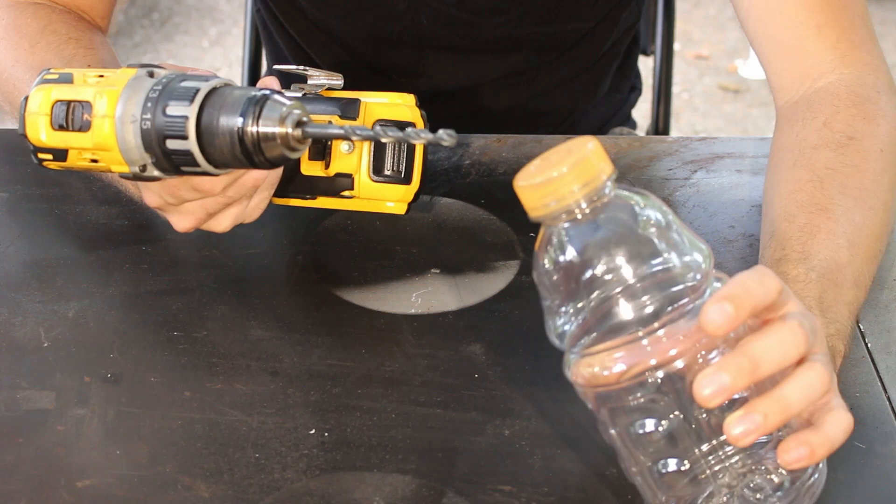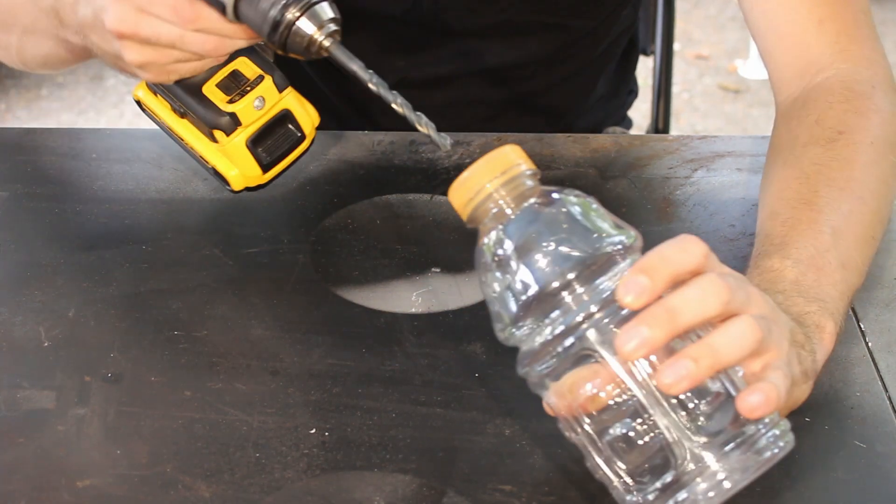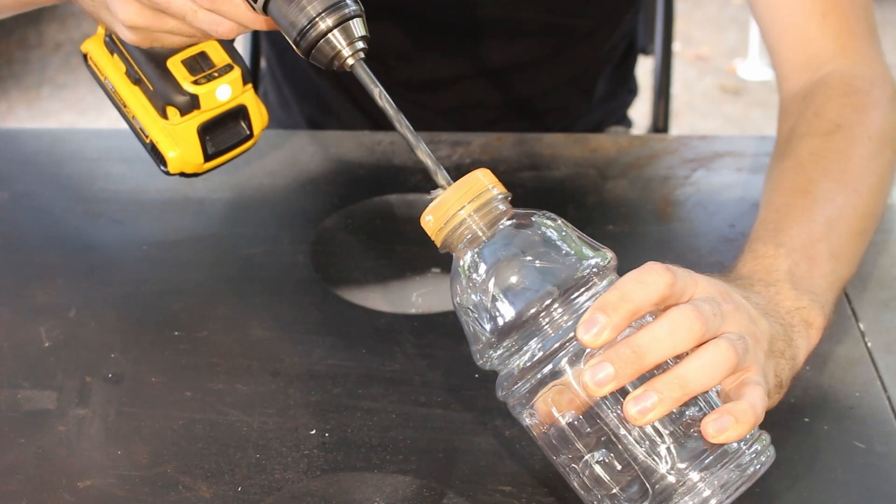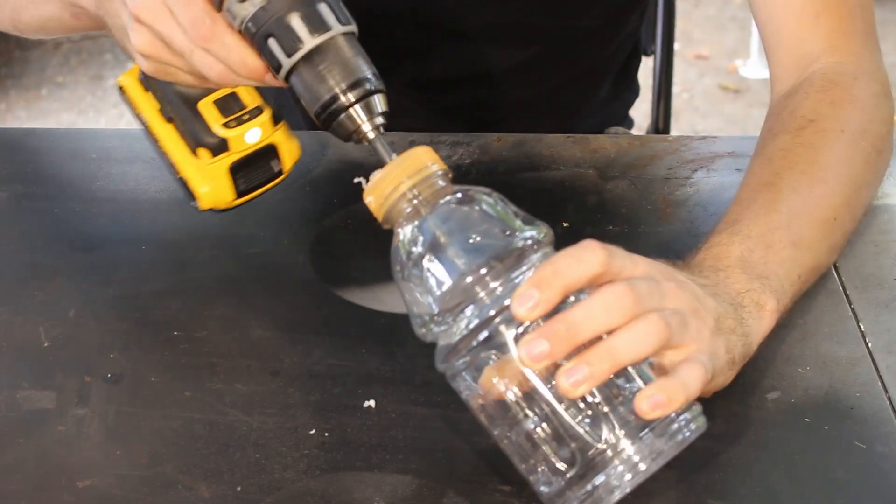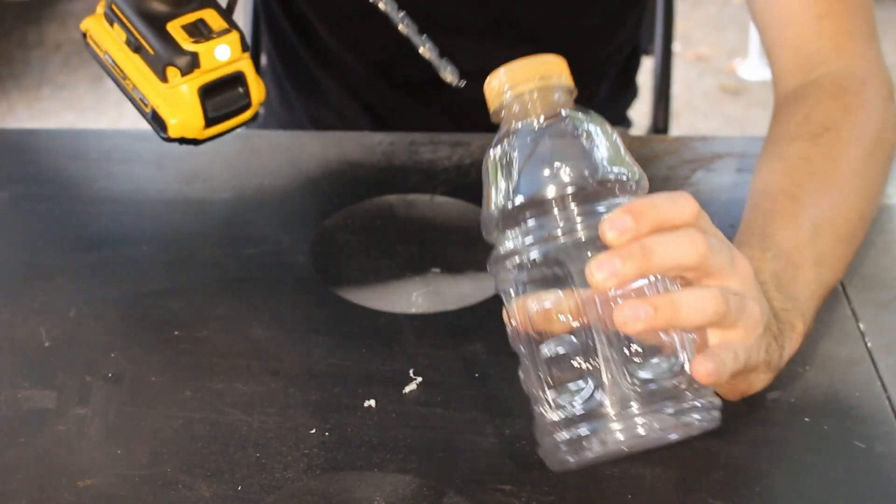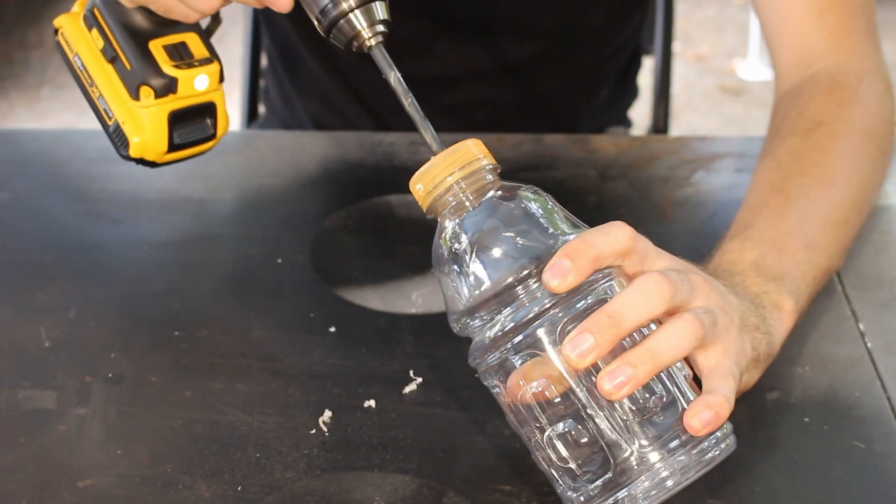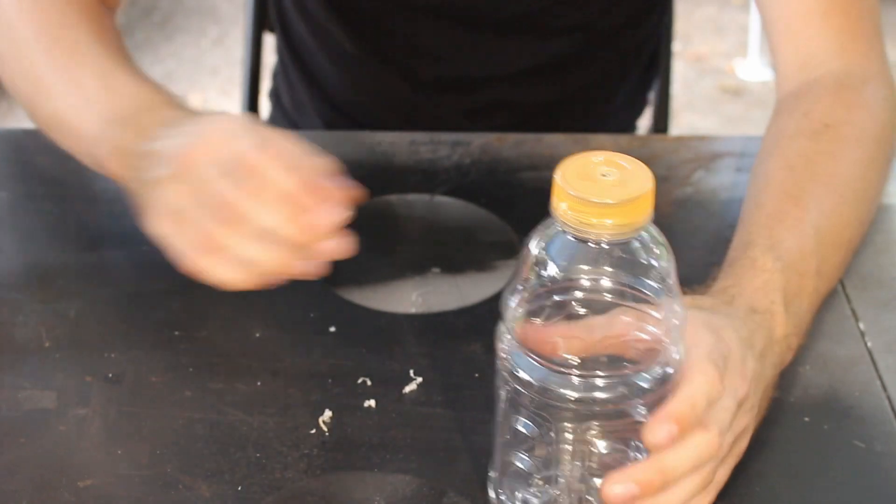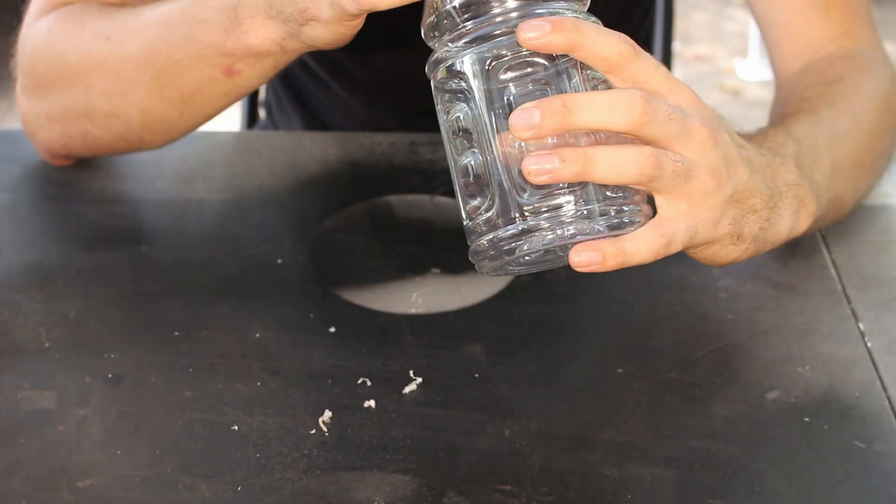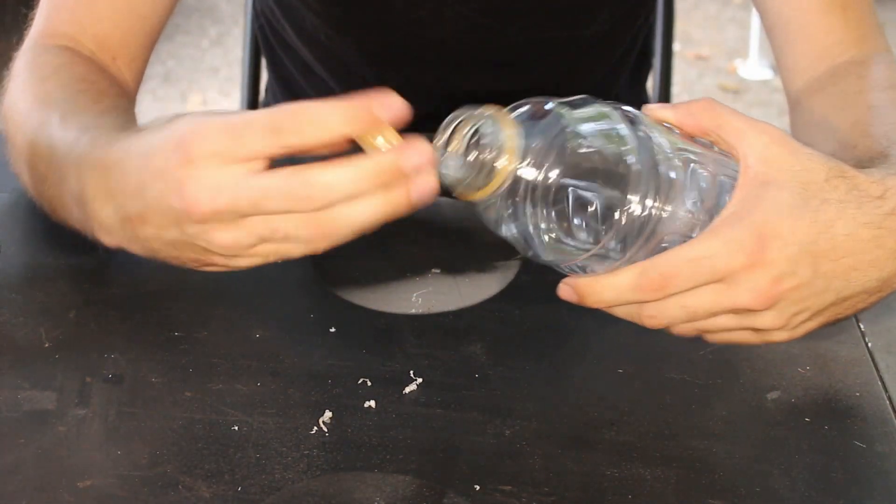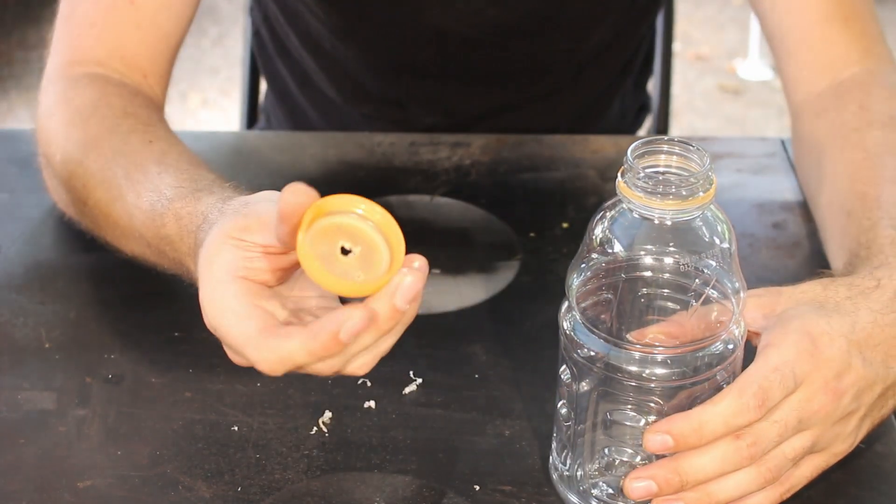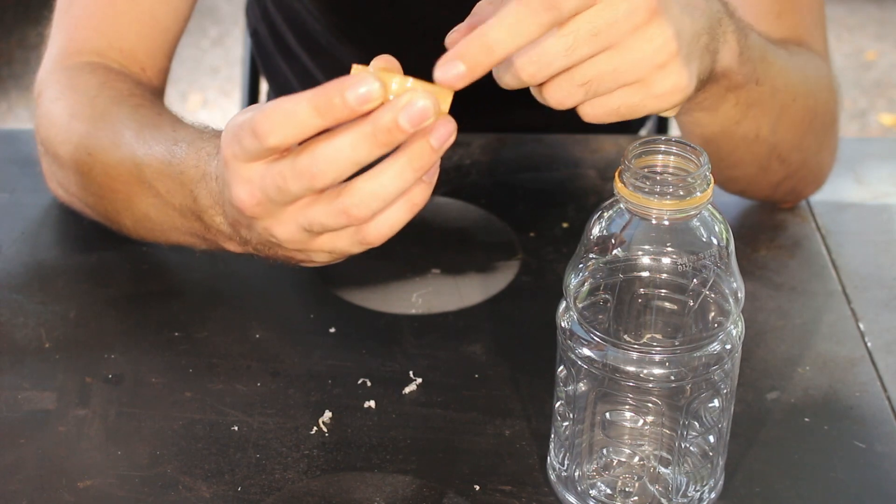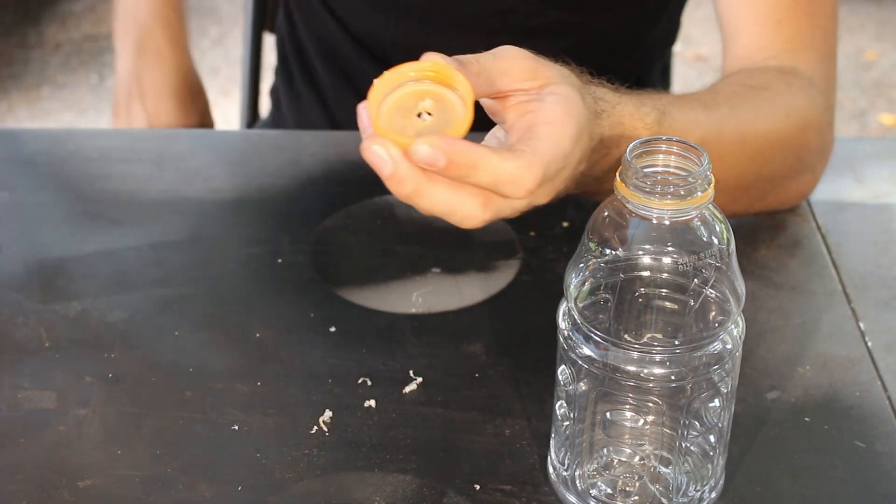And then I'll enlarge the center hole with a 5/16ths bit. And inside the cap there's some extra plastic that didn't get broken off. That's where your knife comes in.